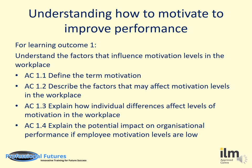We will now focus on the assessment criteria — what you specifically need to do to achieve the learning outcomes. I will highlight the key verbs for each criterion, as it's vital that you answer these in order to pass your assignment. AC 1.1 is to define — define the term motivation. This is where you create your own statement on what you believe motivation is. AC 1.2 is to describe — describe the factors that may affect motivation levels in the workplace, painting a picture in words of the different factors, for example management style.